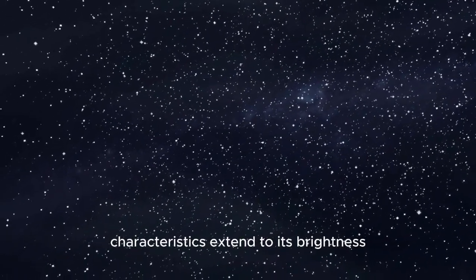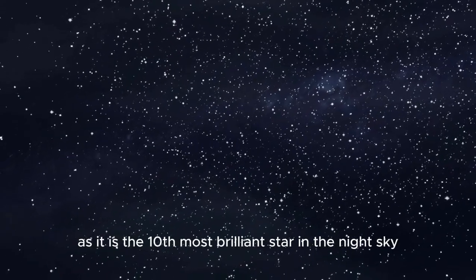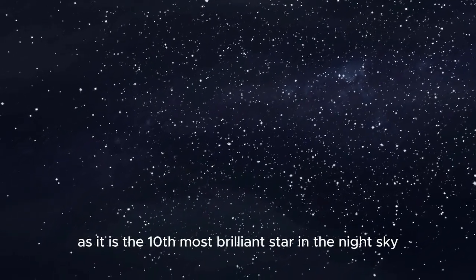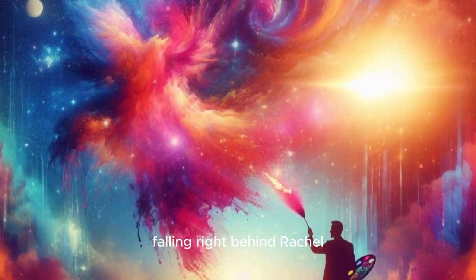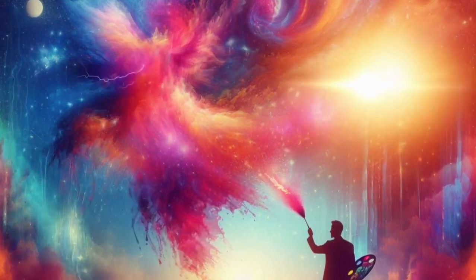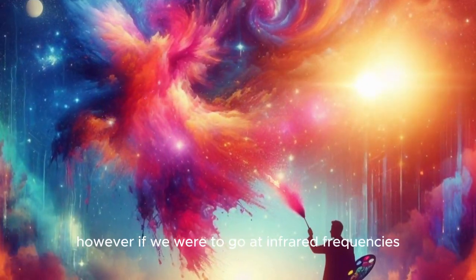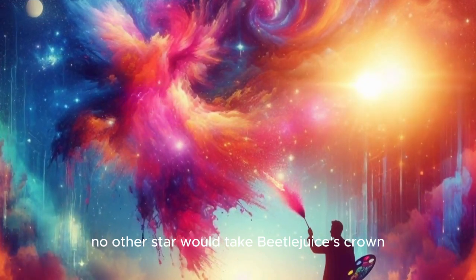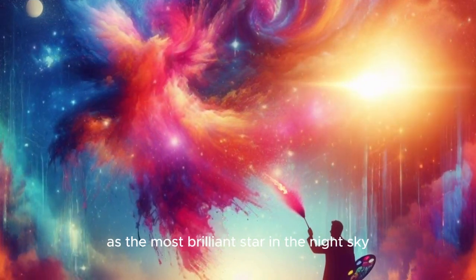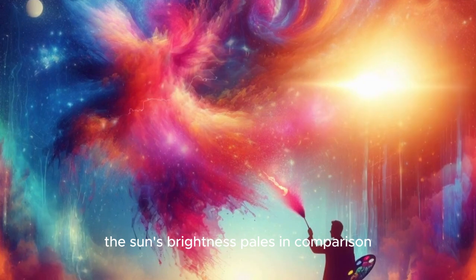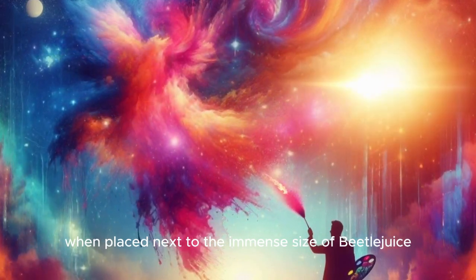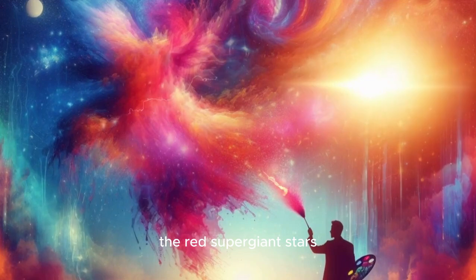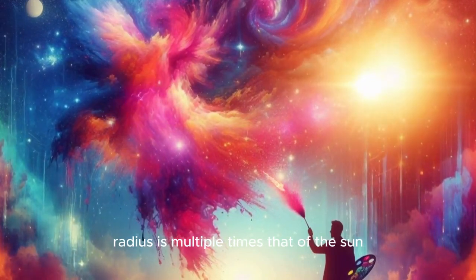Betelgeuse's astounding characteristics extend to its brightness, as it is the tenth most brilliant star in the night sky and the second most brilliant in its constellation, falling right behind Rigel. However, if we were to go at infrared frequencies, no other star would take Betelgeuse's crown as the most brilliant star in the night sky. The Sun's brightness pales in comparison when placed next to the immense size of Betelgeuse. The red supergiant star's radius is multiple times that of the Sun.